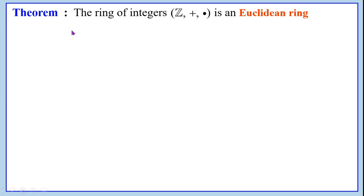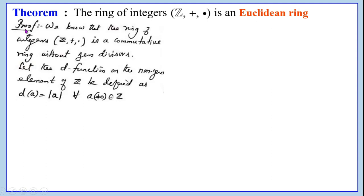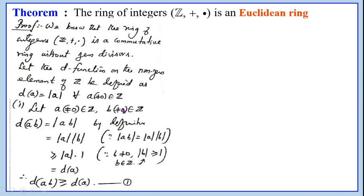We will prove the theorem: the ring of integers, namely Z with addition and multiplication, is a Euclidean ring. Proof: We know that the ring of integers Z is a commutative ring without zero divisors. Let the D function on the non-zero elements of Z be defined as D(A) equals the modulus of A for all A not equal to 0 in Z. Let A not equal to 0 and B not equal to 0 both belong to Z.